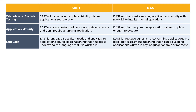In terms of language, SAST is language-specific. It reads and analyzes an application's source code, meaning that it needs to understand the language that it is written in. DAST is language-agnostic. It tests running applications in a black box assessment, meaning that it can be used for applications written in any language for any environment.